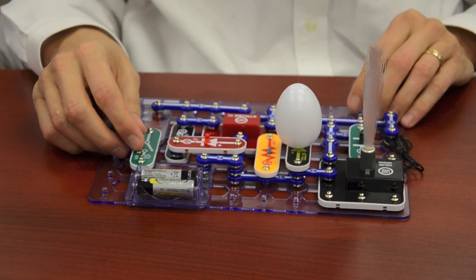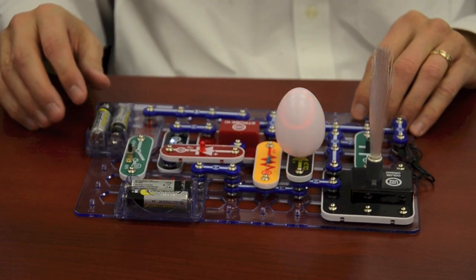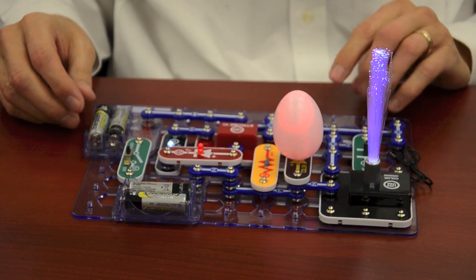And this is an example circuit, one of the circuits that you can build. This is the light show. Turn on the lights so you can see it better.